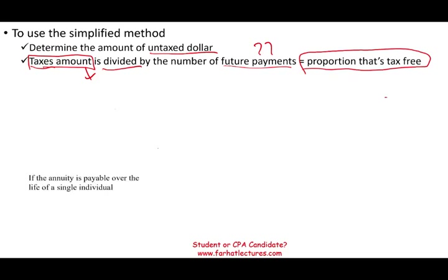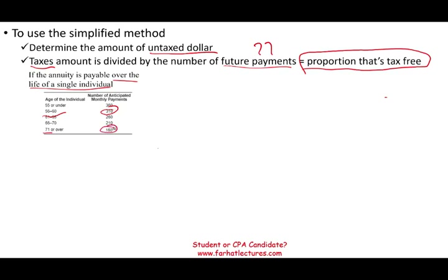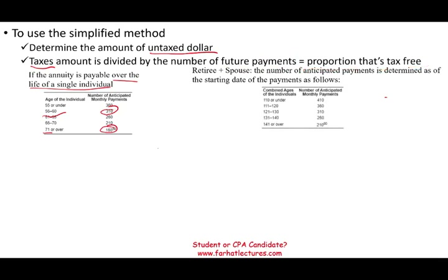Let's look at the tables — the number of future payments comes from an IRS table. If the annuity is payable over the life of a single individual: age 55 or under, we assume 360 months; age 55 to 60, 310 months; age 71 or over, 160 months. If the retiree and spouse are both on the plan, you combine their ages and use a different expected future payment table — because if the retiree dies, the spouse will continue to receive the benefit.